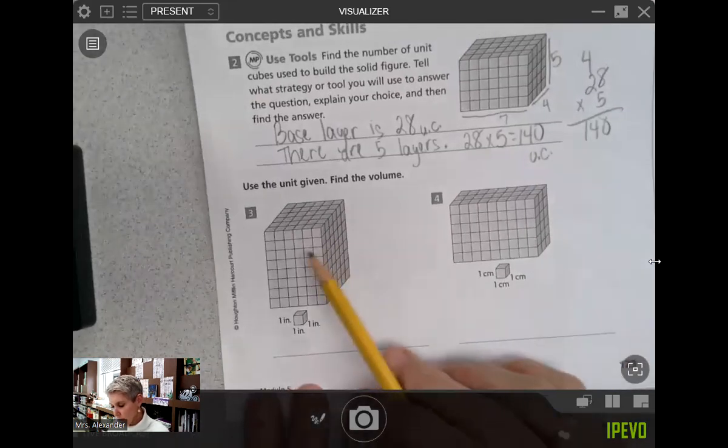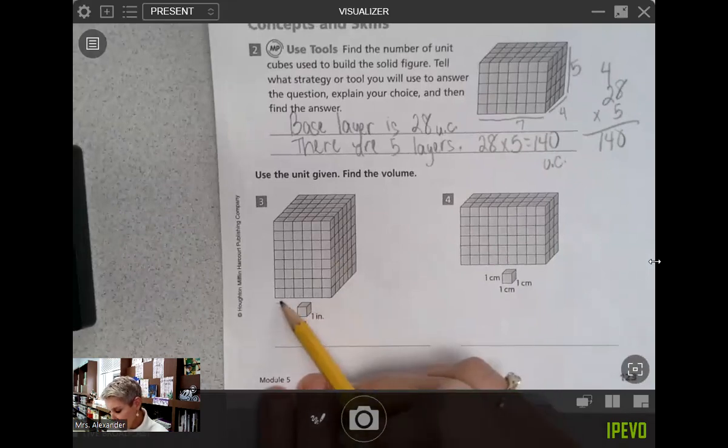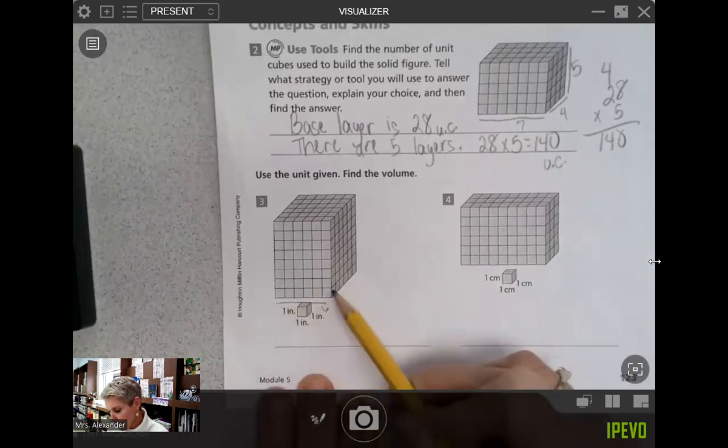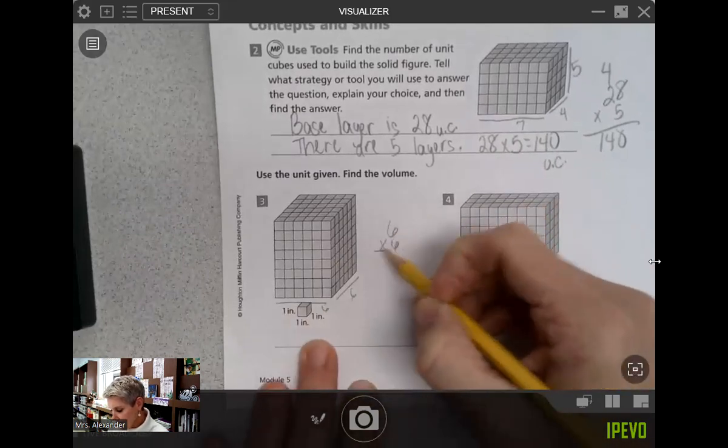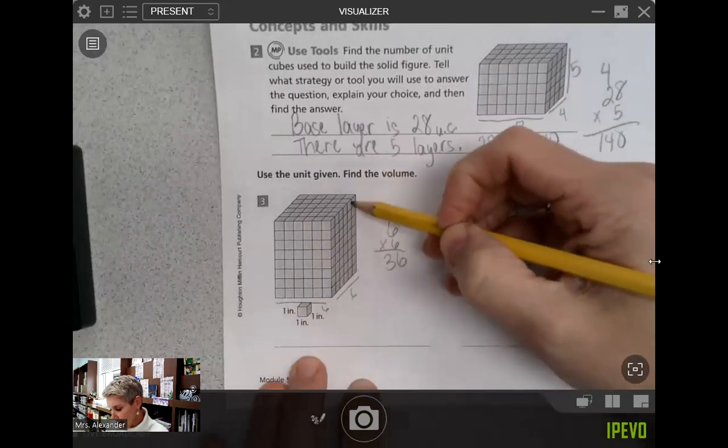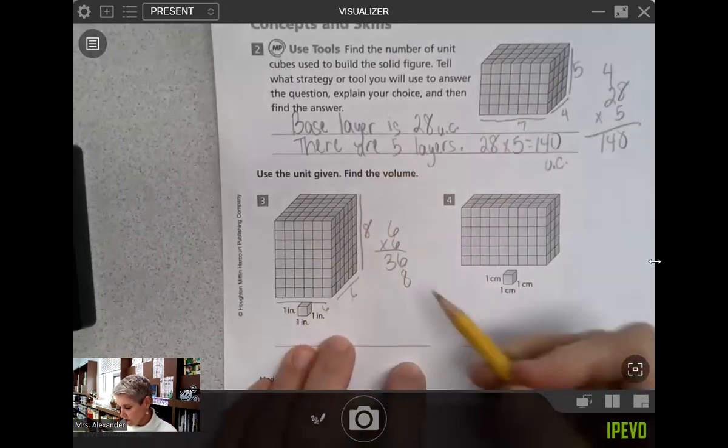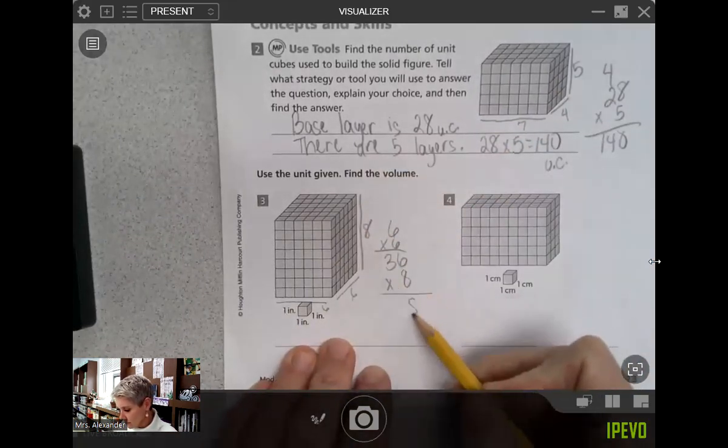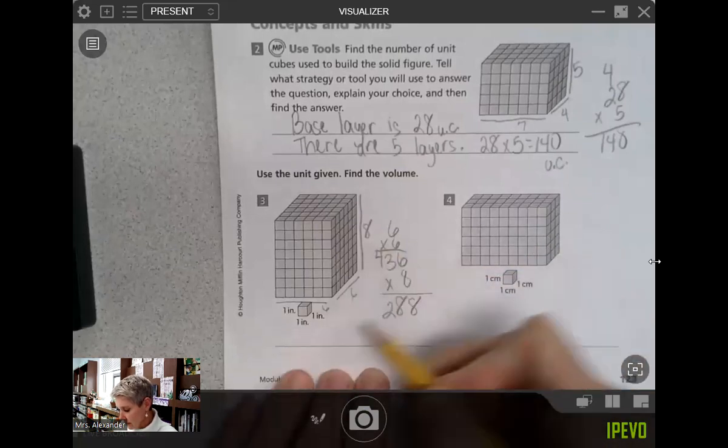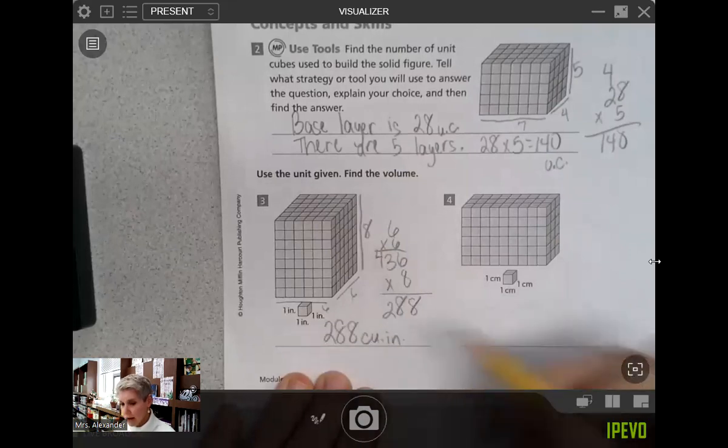Next, use the unit given and find the volume. So here we're working with one inch cubes. One, two, three, four, five, six in front. One, two, three, four, five, six rows. Six times six equals 36. And there are one, two, three, four, five, six, seven, eight layers. So I'm going to then multiply that by eight. And I believe we would get 288 cubic inches for that one.